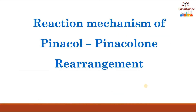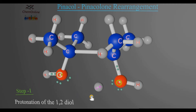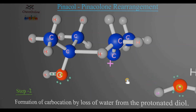Now let's understand the mechanism of pinacol-pinacolone rearrangement with the help of an animation. The first step involves the protonation of one of the OH groups of the pinacol to form OH₂⁺. In the second step, a carbocation is formed by loss of water from the protonated diol. As you can see, a carbocation is formed and a water molecule is leaving.